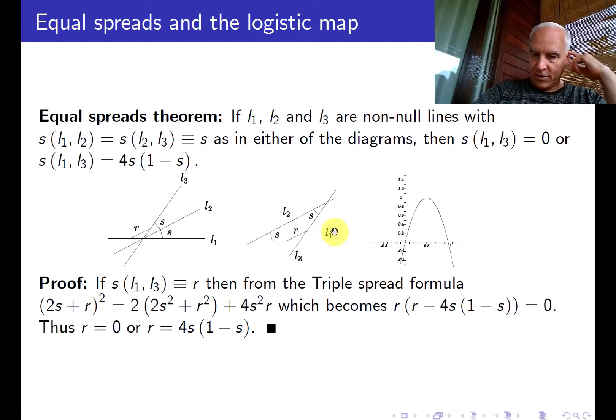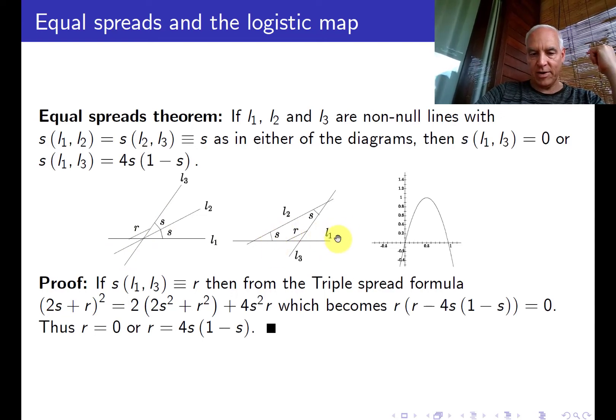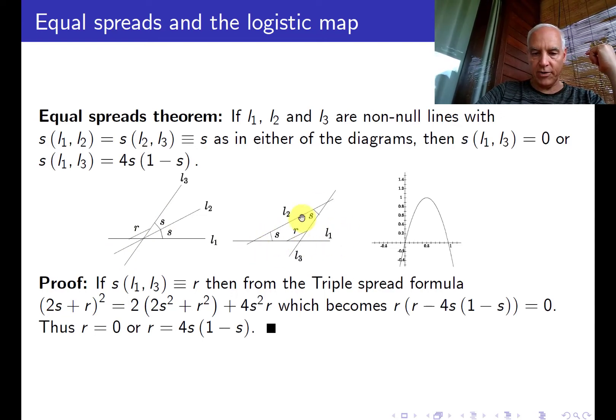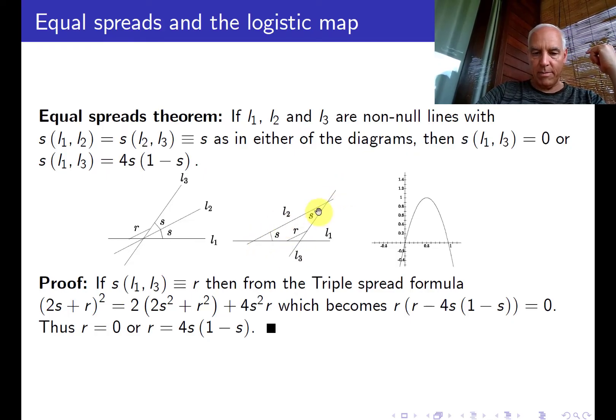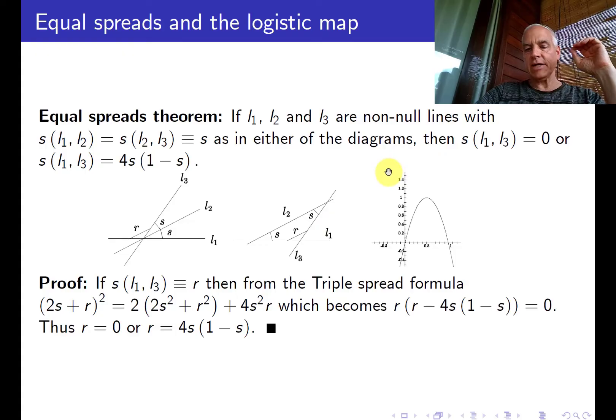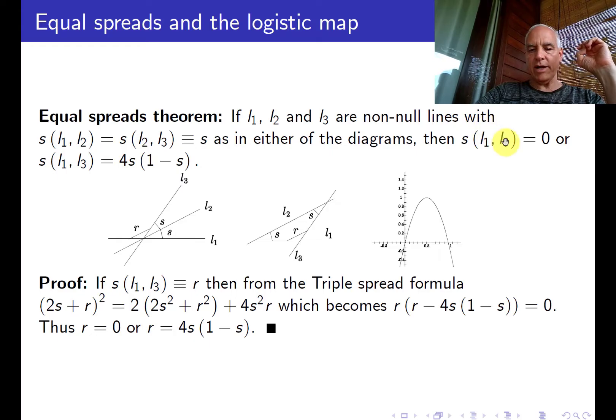Here's another configuration that still satisfies the same criteria. So here's L1 and here's L2 and they make a spread of S, and L2 and L3 make a spread of S, and then the spread between L1 and L3 is R. The statement is that this spread between L1 and L3 is either 0 or it's equal to 4S(1-S).